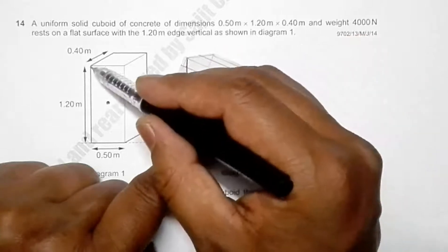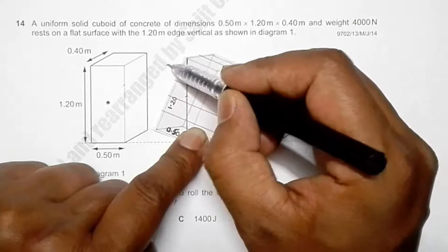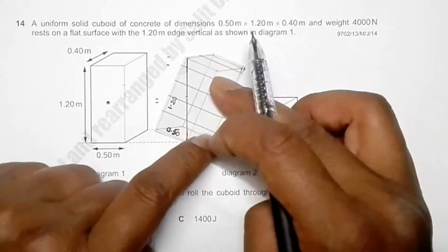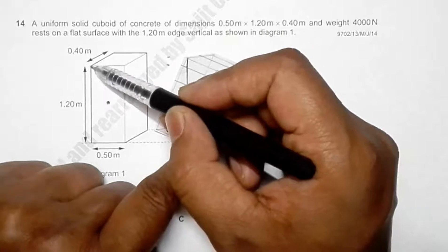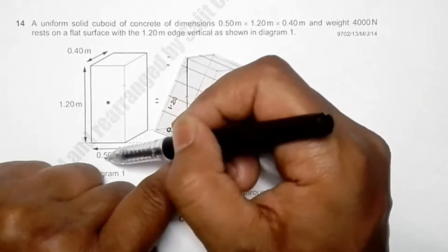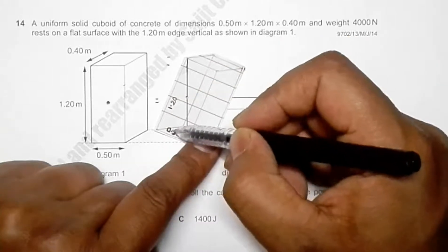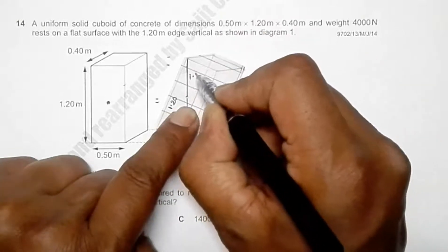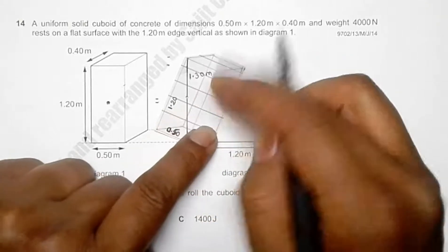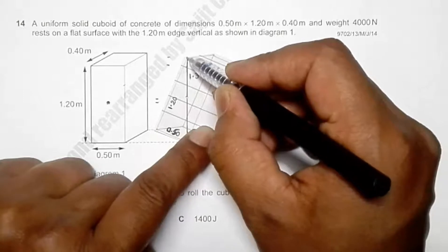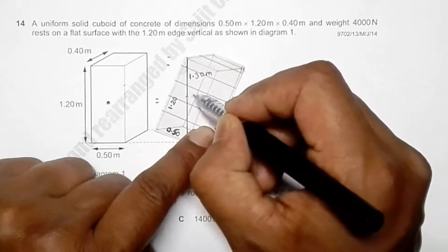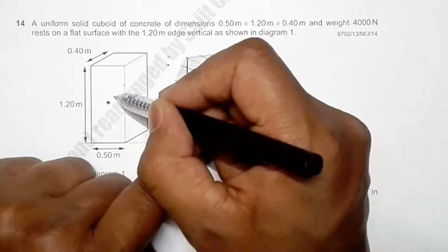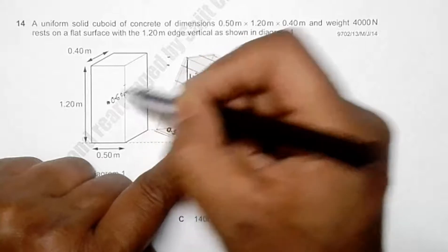We need to find by how much the CG rises. The cuboid has sides 1.20 meters and 0.50 meters. By Pythagoras' theorem, the diagonal is √(1.20² + 0.50²) = √(1.44 + 0.25) = 1.30 meters. When balanced on the corner, the CG is at half the diagonal height, which is 0.65 meters. Initially, the CG was at half the height of 1.20 meters, which is 0.60 meters.